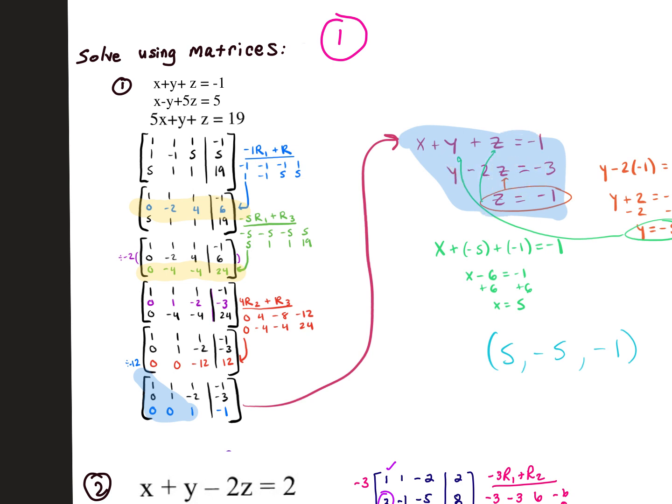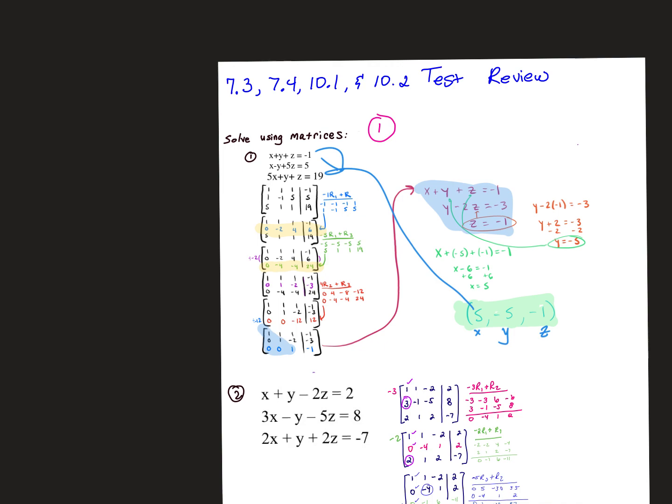On the test, there are no fractions. Everything is nice, pretty whole numbers. So just make sure that when you get to the end, you have your ordered triple, I should say, not ordered pair. This is your x value. The first is your x, the second is your y, the third is your z. And then go ahead and plug it in to the originals and make sure it satisfies and makes all three equations true. So there'll be one of those.